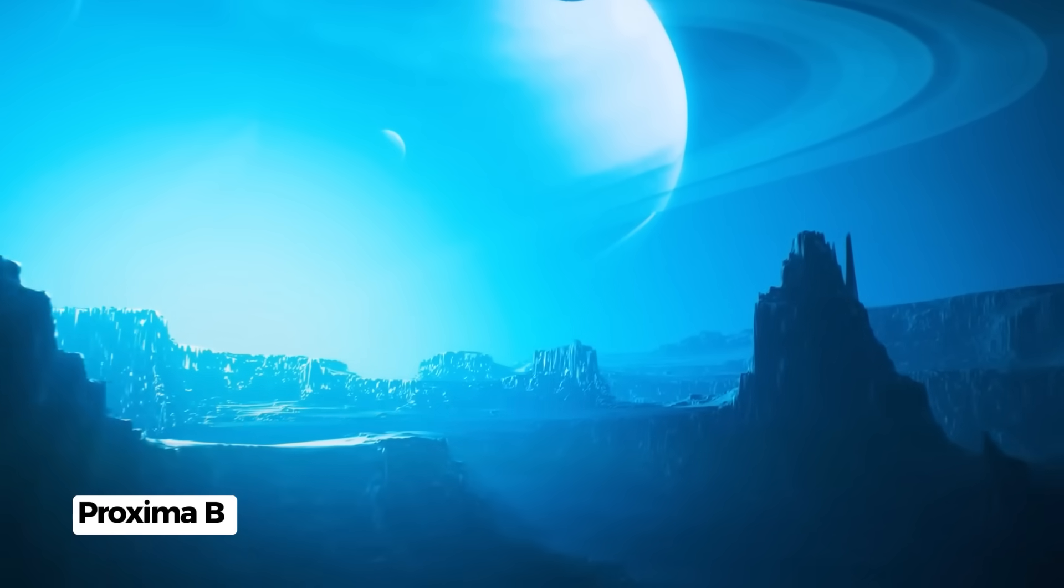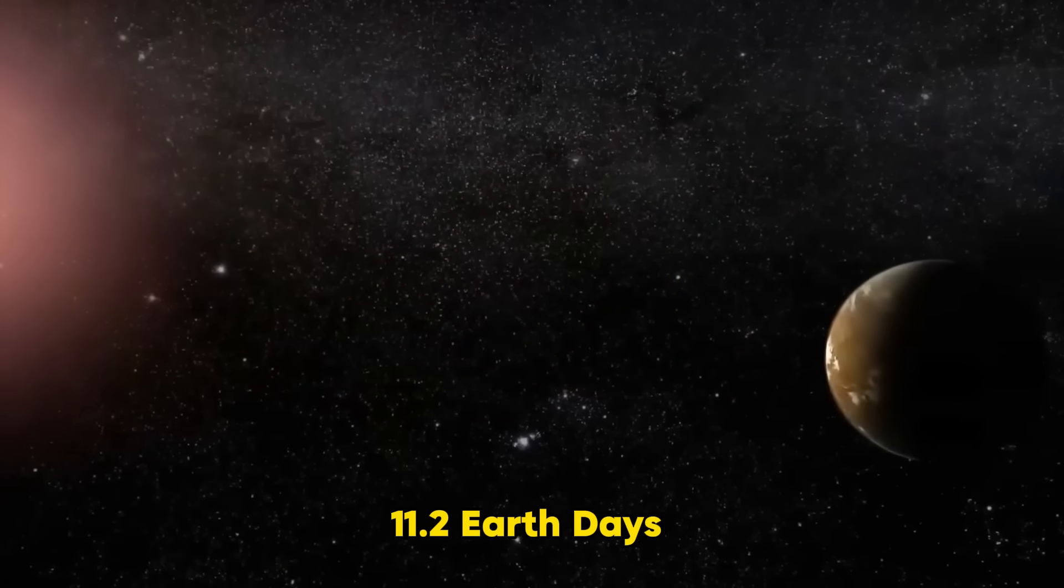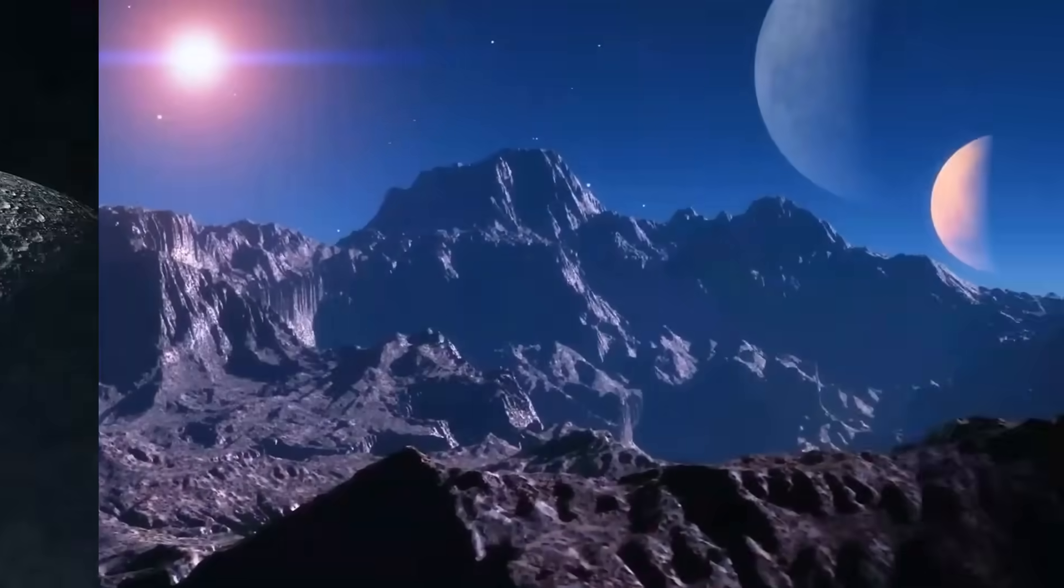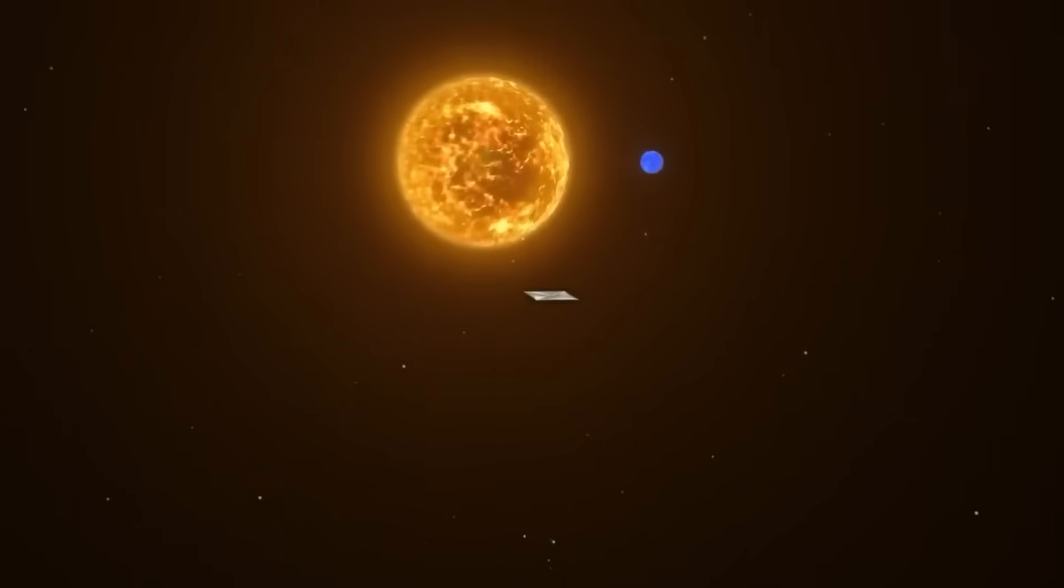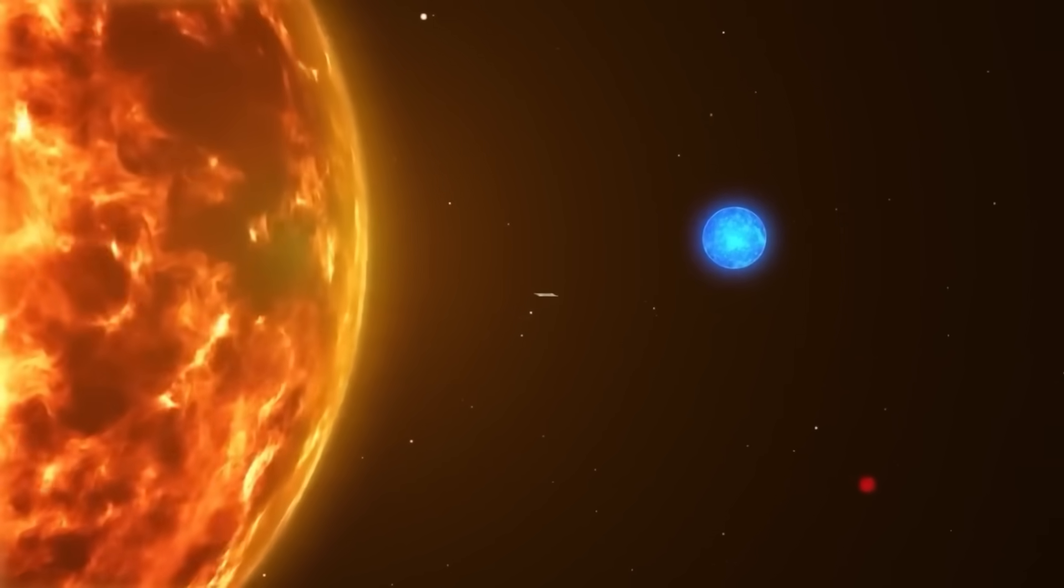Proxima b is an entirely new planet. Even though it has a year that is just 11.2 Earth days long, the planet is almost 30% heavier than our own. Its 7.3 million kilometer orbital radius is less than 5% of the distance between Earth and the Sun, which is why it is so small.